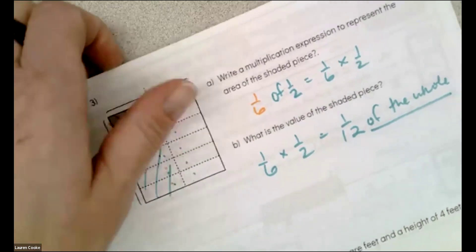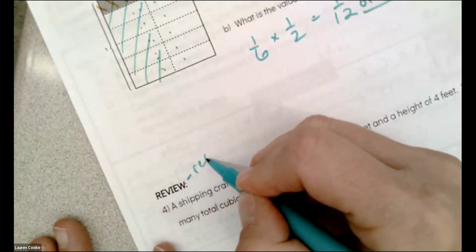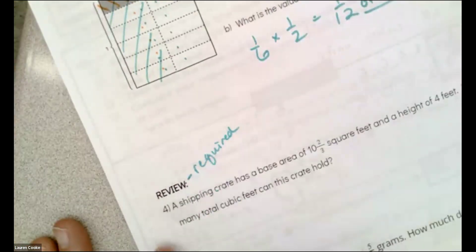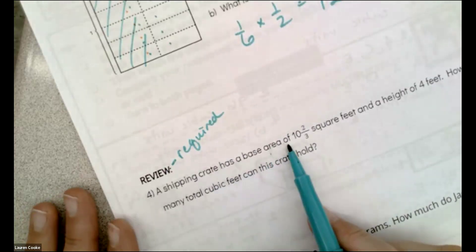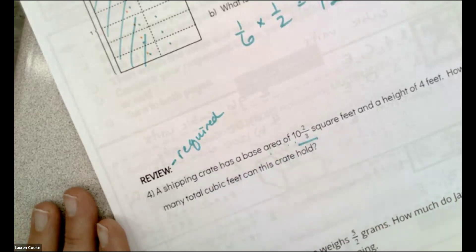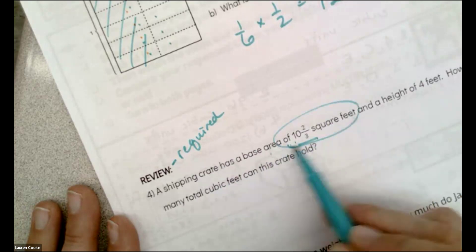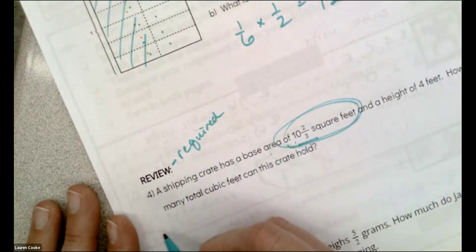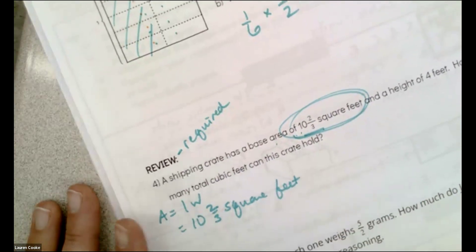Awesome. Now these review problems are required, they're not like suggested. Some of you skip them, don't do that, they get marked wrong. A shipping crate has a base area of 10 and two-thirds square feet and a height of four feet. If something already has square feet, I know that it already has the area of length times width, and that's 10 and two-thirds square feet.